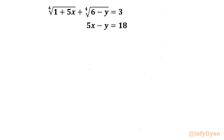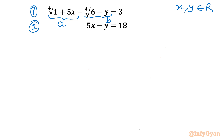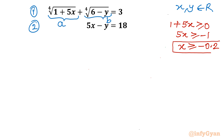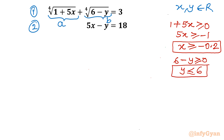Let's get started by writing the substitution and the domain of the equation. x, y belong to real numbers. The very first fourth root I will consider as a, and the second fourth root as b. For the domain: since a fourth root is involved, 1 + 5x must be greater than or equal to 0, so x must be greater than or equal to negative 1/5, that is negative 0.2. Similarly, 6 minus y must be greater than or equal to 0, so y must be less than or equal to 6.